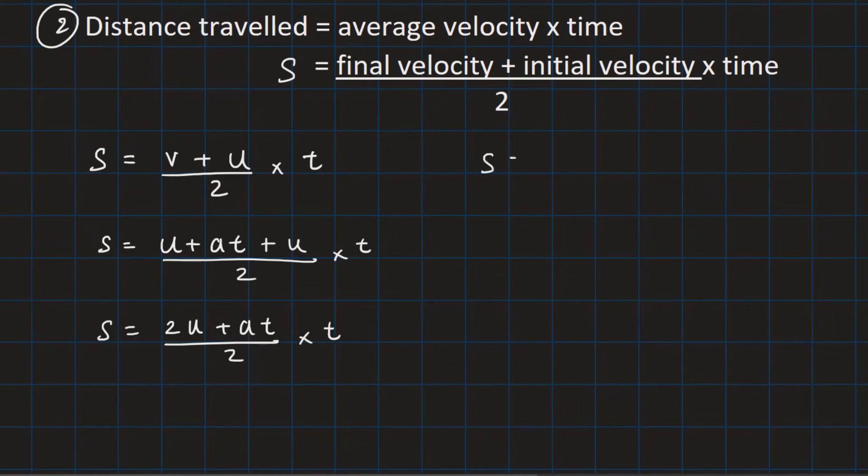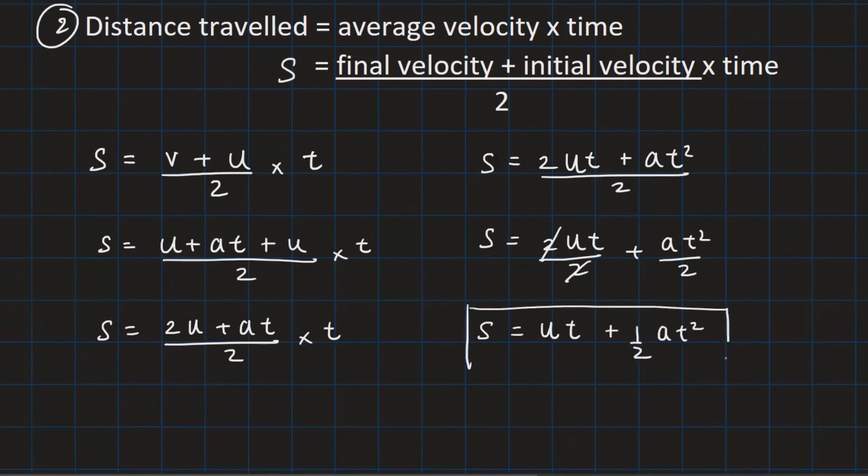When the t is taken inside, we get 2ut plus at squared over two. So 2ut upon two plus at squared upon two. This gets canceled. s is equal to ut plus half at squared. So this is the second equation.